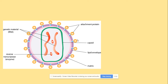This is the structure of HIV. Starting with the outermost components: we have attachment proteins, which are here to make sure that HIV can attach to the host cell. We have a lipid envelope, a matrix, reverse transcriptase enzyme — which will be involved in the replication of HIV — and genetic material RNA.